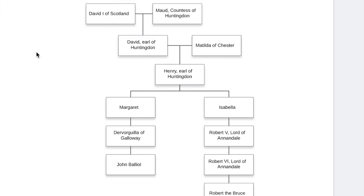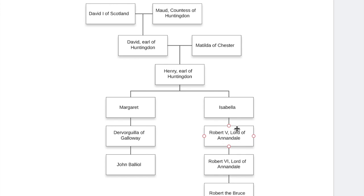Let's do a family tree. David I of Scotland had several sons, and David the Earl of Huntington was his heir — but David the Earl of Huntington died before his father, so David I's other sons became king in turn. David the Earl of Huntington had several children including two daughters: Margaret, whose grandson was John Baliol, and Isabella, whose son was Robert the fifth Lord of Annandale. That is why Robert the fifth had a closer claim — David I was his great-great-granddad, whereas for John Baliol, David I was his great-great-great-granddad.